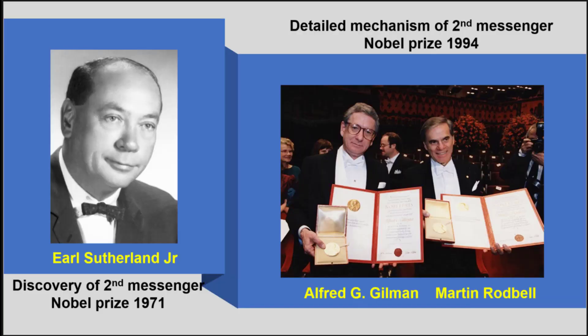Second messengers were discovered by Earl Sutherland Jr., for which he won the 1971 Nobel Prize in Physiology or Medicine. He found that epinephrine alone cannot initiate glycogenolysis in hepatocytes but must trigger cyclic AMP to exert this action. Later, the detailed mechanism was worked out by Martin Rodbell and Alfred Gilman, who also won the 1994 Nobel Prize for the same.